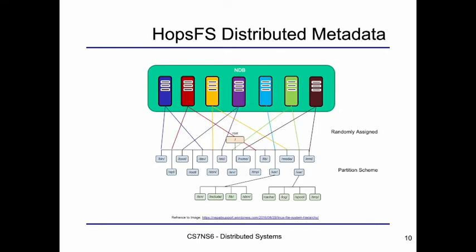To elaborate further, suppose we have a hierarchical file system. For the top-level directories, they are randomly assigned to partitions. The children of the top-level directories and all their related metadata — such as metadata for blocks and replicas — will consequently reside on the same partition.